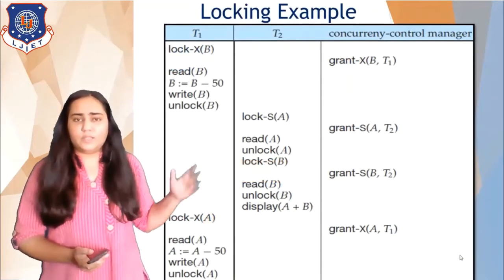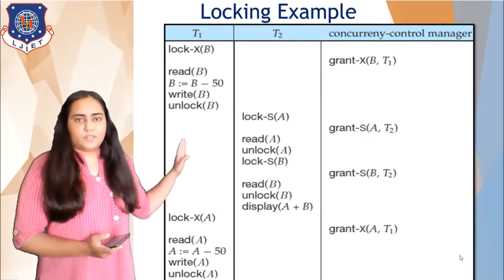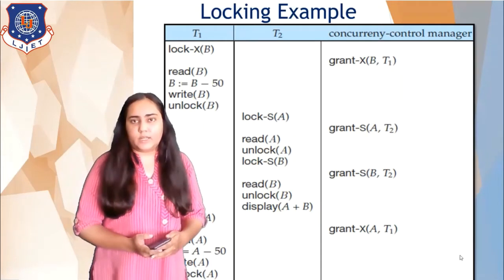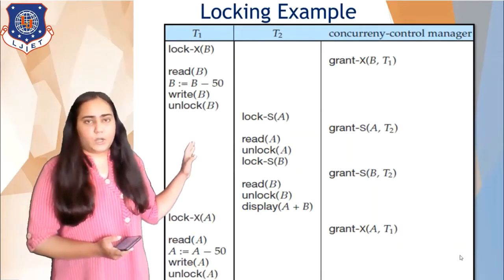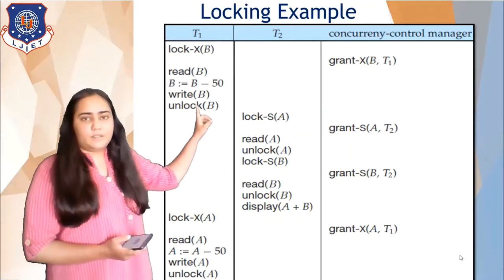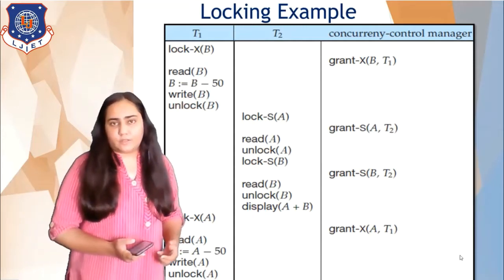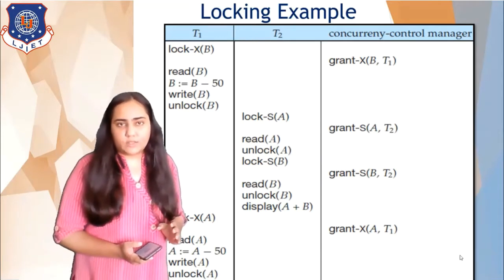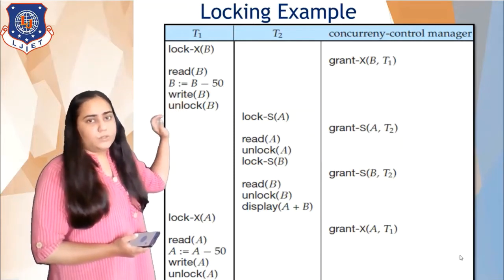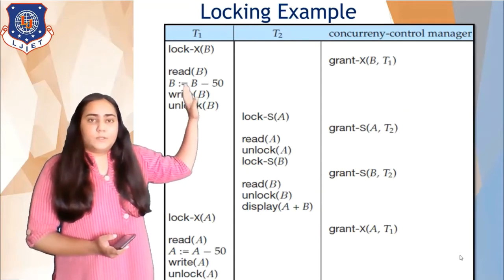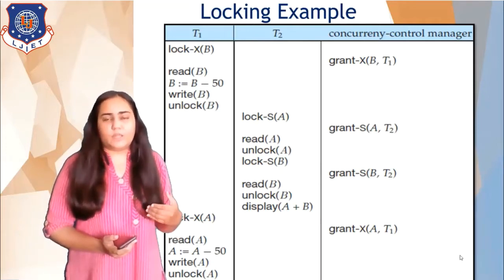On screen now there is an example of how locking works in practice. There is transaction T1, transaction T2, and a concurrency control manager. Whenever a transaction starts and it wants to read a particular data item B, the transaction is going to obtain a lock first. In this case the transaction also wants to write, so there's both a read operation and a write operation. That is why the transaction obtains an exclusive lock — lock XB — not a shared lock, because it knows it's eventually going to write.